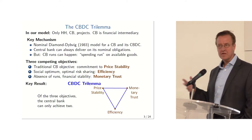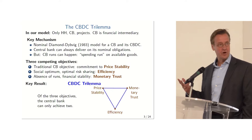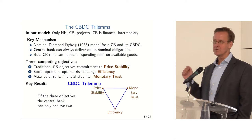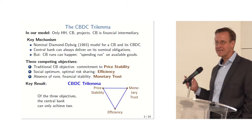The key mechanism is maturity transformation. Diamond-Dybvig is the benchmark model for doing that. Now it's going to be a nominal version of the model. The liabilities of the central bank are nominal, and therefore if you go to the central bank and say 'I want my 50 euros, I'm running on you,' they just give you 10-year-old notes. So there's no obligation there.